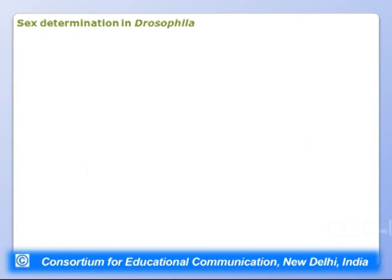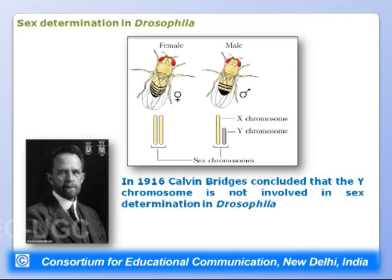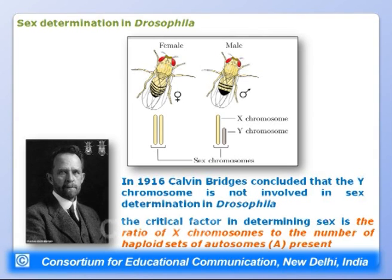In Drosophila, sex determination follows an XX/XY mechanism — females are XX and males are XY. However, in 1916, Calvin Bridges concluded that the Y chromosome is NOT involved in sex determination in Drosophila. The critical factor is instead the ratio of X chromosomes to the number of haploid sets of autosomes (X:A ratio), similar to C. elegans. The Y chromosome is required for male fertility but not for sex determination.